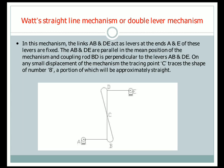The last inversion is the Watt straight line mechanism or double lever mechanism. There are four links: AB, BD, DE, and the fixed hinges. In this mechanism, links AB and DE act as levers with ends A and E fixed. Links AB and DE are parallel in the mean position of the mechanism, and the coupling rod BD is perpendicular to the levers AB and DE. On any small displacement, the tracing point C traces the shape of the number 8, a portion of which will be approximately straight.